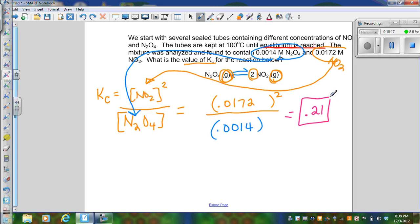If I look at my answer, k is less than 1, which means that this is reactant favored or the equilibrium would lie to the left.